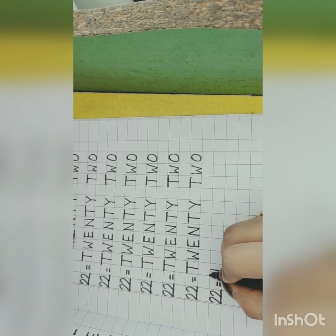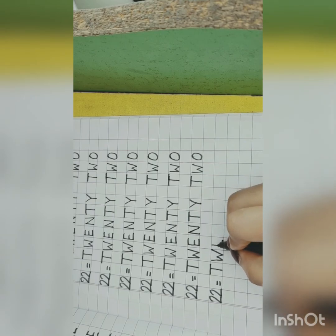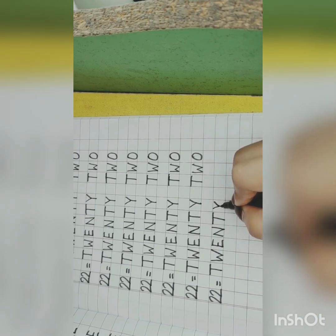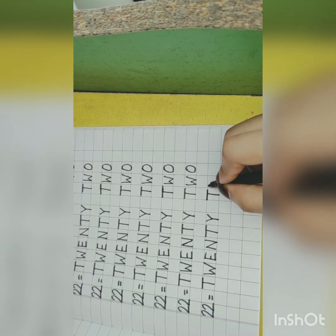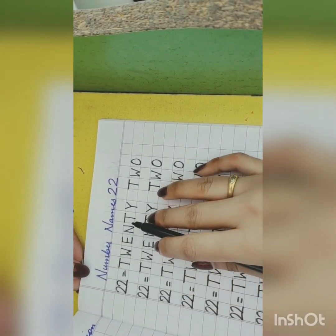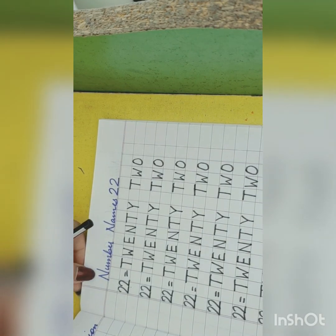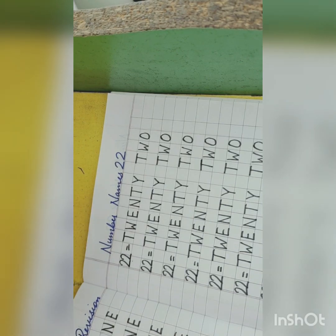Now what you have to do in your homework: you have to learn the number names of twenty-two, okay? You have to learn and practice in one page. Aapko homework mein kya karna hai? Number names twenty-two aapko learn karna hai, ek page mein practice karna hai. Pehle aapko number likhna hai, phir spelling likhna hai. After your homework, click a picture and send it to the school WhatsApp number. Do practice at home — till then, thank you and take care.